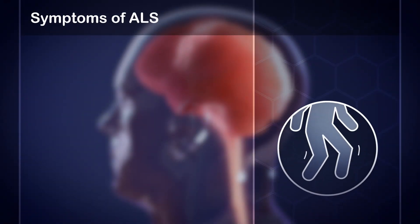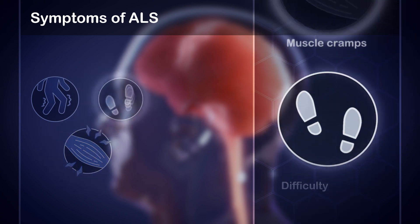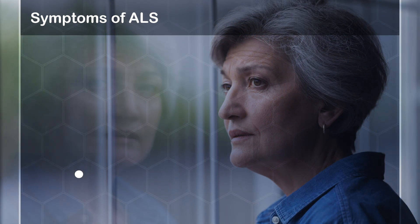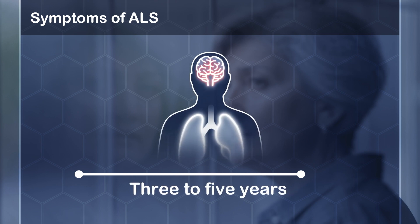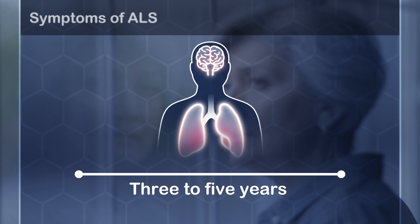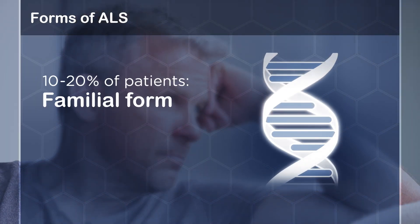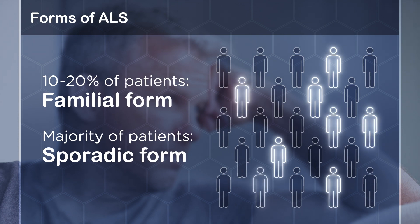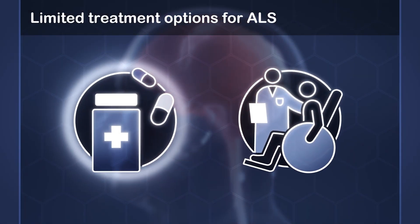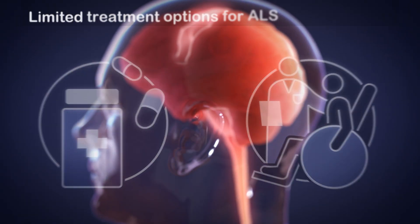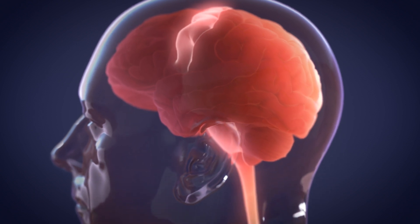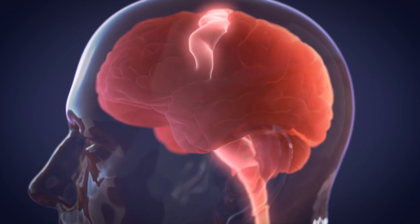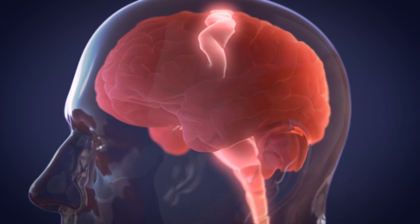People living with ALS experience weakness, muscle cramps, difficulty walking, slurred speech, difficulty swallowing, and breathing problems. The disease progresses rapidly over the course of three to five years, with respiratory failure being the main cause of death. Approximately 10 to 20 percent of patients have a familial form of ALS with a known genetic cause, but the majority of patients have a sporadic form of ALS. There are limited treatment options for people with ALS and no cure for this disease.